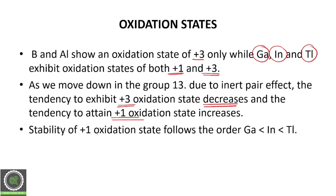The stability of the +1 oxidation state follows the order: gallium < indium < thallium. This is an important order to remember.